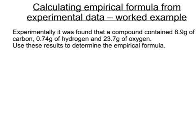So here's another kind of question. Calculating the empirical formula from experimental data, a worked example. Now, experimentally, it was found that a compound contained 8.9 grams of carbon, 0.74 grams of hydrogen, and 23.7 grams of oxygen. Now, in order to find out the formula for this, we need to know not the masses, but we need to know the moles.